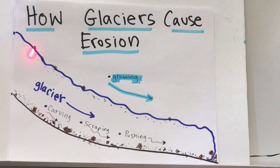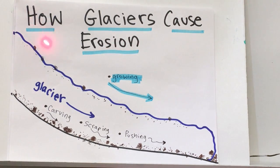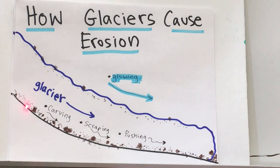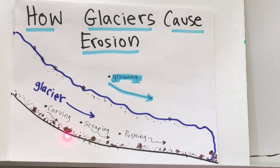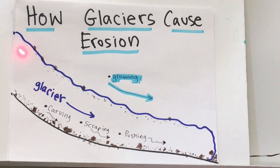How glaciers cause erosion. Erosion is the movement or transport of sediment. As glaciers are growing and pushing downhill, they grab pieces of rock and sediments — everything from small sand particles all the way to large boulders the size of a house. The glacier will be carving and scraping and pushing the sediments from uphill downhill.